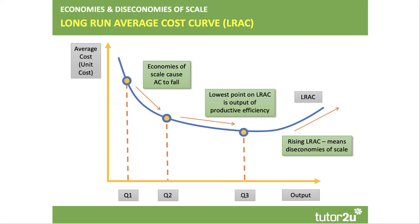Moving to long-run costs, you don't necessarily need a very complicated diagram. In the long run, firms can change the scale of production — they can change all of their inputs. You need to draw the possible shape of the long-run average cost curve. When there are increasing returns to scale, average costs are falling — we call that economies of scale, e.g. from Q1 to Q2. Eventually we may reach the minimum efficient scale (Q3), which is the lowest point on the LRAC — the point of productive efficiency. Beyond that, firms may experience decreasing returns to scale, known as diseconomies, with increasing unit costs.